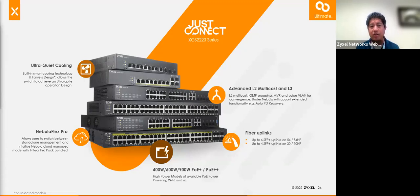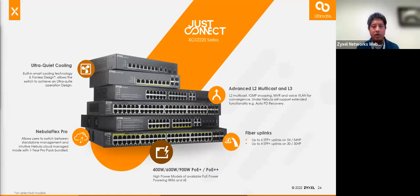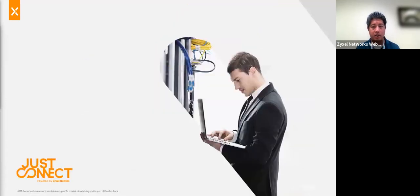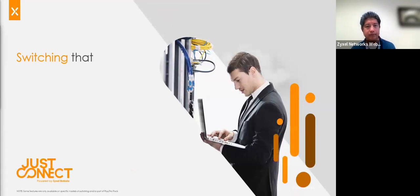All those static routes and feature functionalities — including CLI — are available in this model. Same with our GS2220 series. If you've been using our 2210, those have Layer 3 but don't have Nebula. The XGS2220 is our Nebula Pro capable model, and it comes with one year of the ProPAC bundle as well — so you're getting a lot of value in this particular model with that 10 gig uplink.